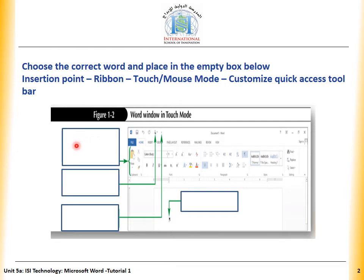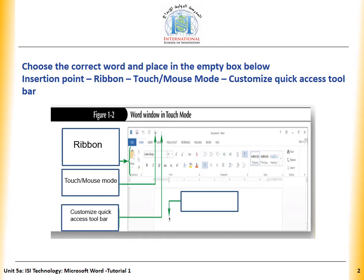What about the first one? It's ribbon. What about the second one? Touch mouse mode. What about the third one? Customize quick access toolbar. What about the last one? Insertion point.